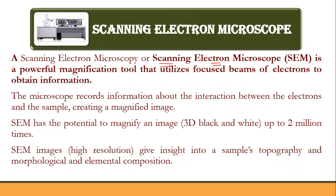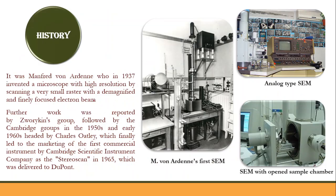In Scanning Electron Microscopy, as the name suggests, you scan the surface of a material using an electron beam. You get a 3D image — black and white — and you can magnify it up to 2 million times. With that level of magnification and very high resolution, you are able to identify the elements present in the substance.